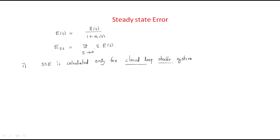The second point: steady-state error is valid only for a unity feedback system. If it is not a unity feedback system, it is not possible to calculate it. The formula is valid only for unity feedback systems.